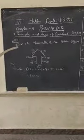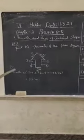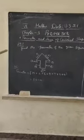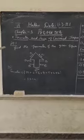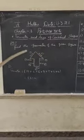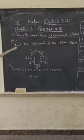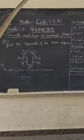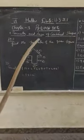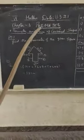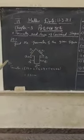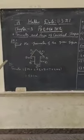Hey students, very good morning. Today I am going to teach Chapter 3: perimeter and area of combined shapes. When two or three shapes are combined, you have to find the perimeter and area. Let us see the first example problem.